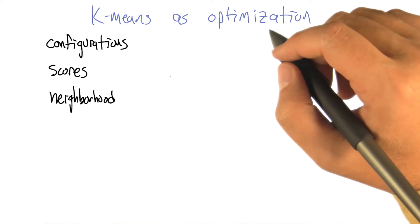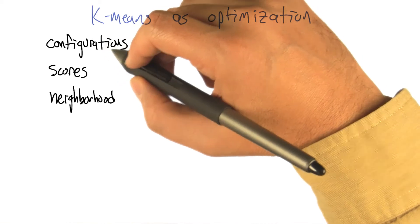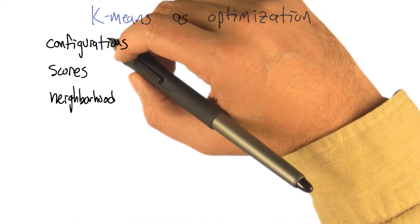We're going to look at k-means as an optimization problem. So remember when we talked about optimization, we worried about configurations. I think we called them inputs at the time, but I think it's going to be helpful to think of them as configurations here.